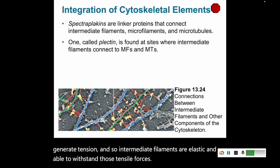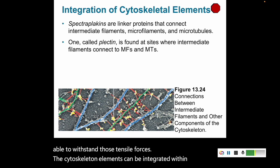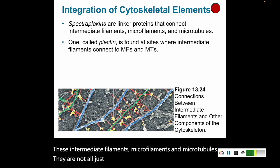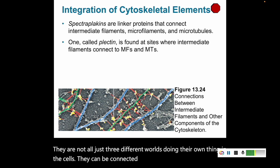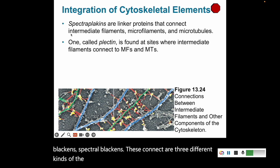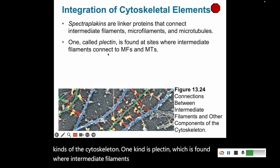Cytoskeleton elements can be integrated with each other. These intermediate filaments, microfilaments, and microtubules are not all just three different worlds doing their own thing in the cells — they can be connected by linker proteins called spectraplakins. One kind is plectin, which is found where intermediate filaments connect to microfilaments and microtubules.